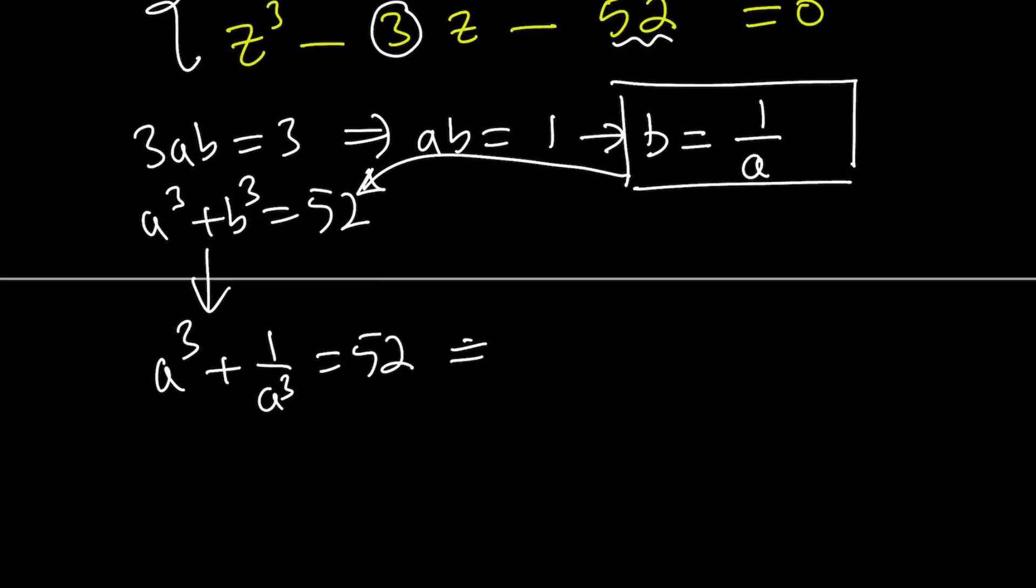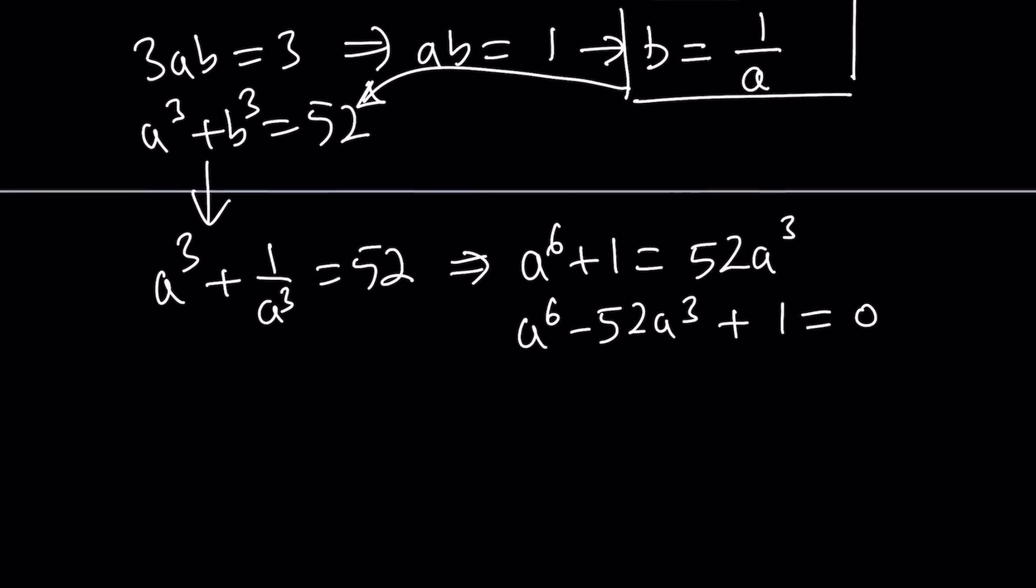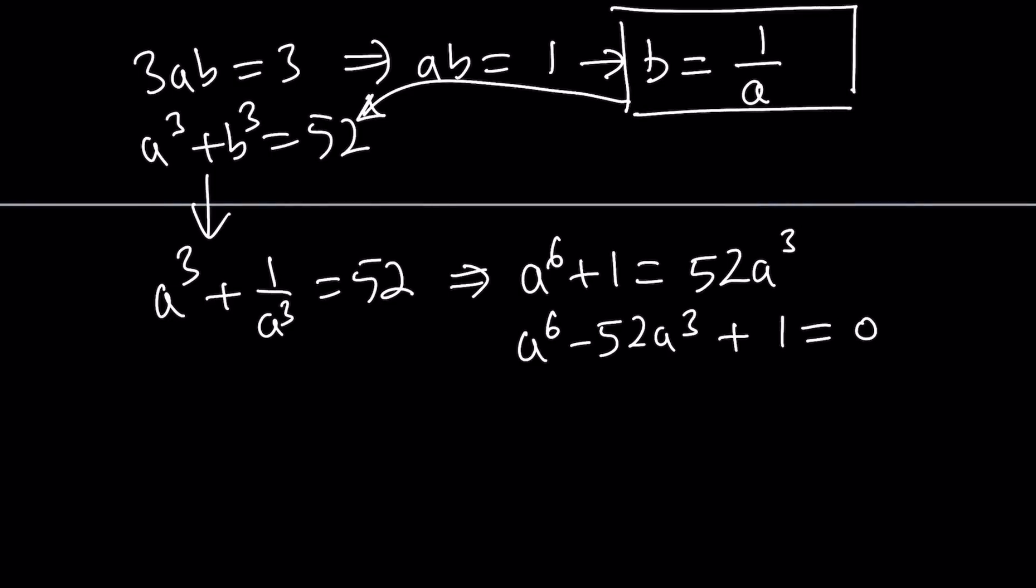First, multiply both sides by a cubed. a to the 6 plus 1 equals 52 a cubed. And then put everything on the same side. But this is not a nice equation. The 6th power is problematic. But we only have 6th and 3rd powers. So we can turn this into a quadratic by replacing a cubed with c, and recognizing that a to the 6th is just a cubed squared.